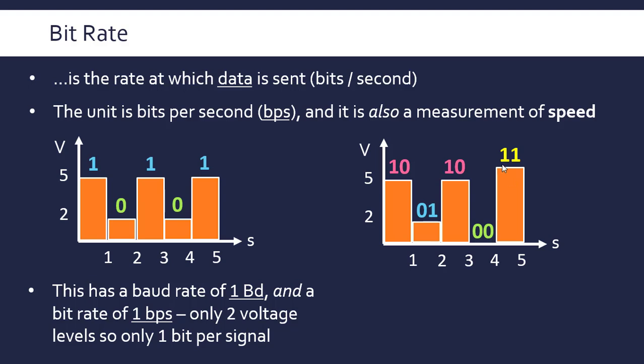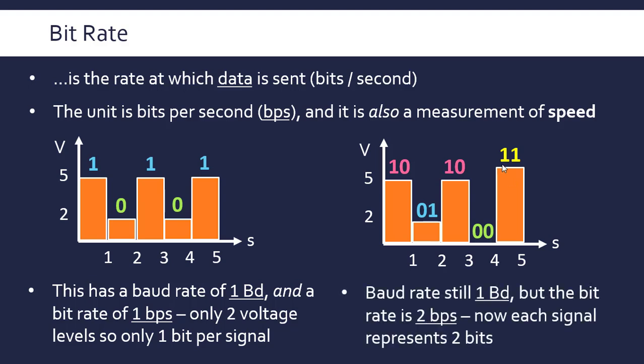If we now increase the number of voltage levels so we have four voltage levels—zero, two, five, and six—we can increase the bit rate despite keeping the baud rate the same. The baud rate here is still one, but the bit rate is two bits per second.